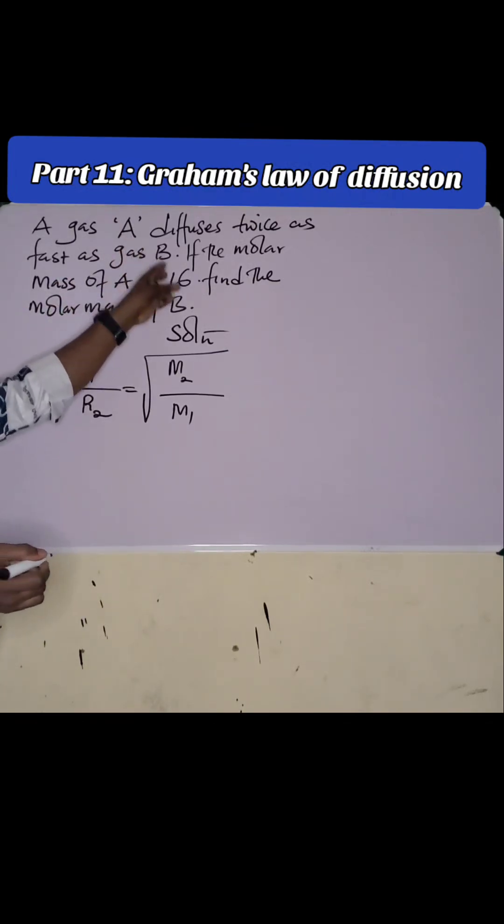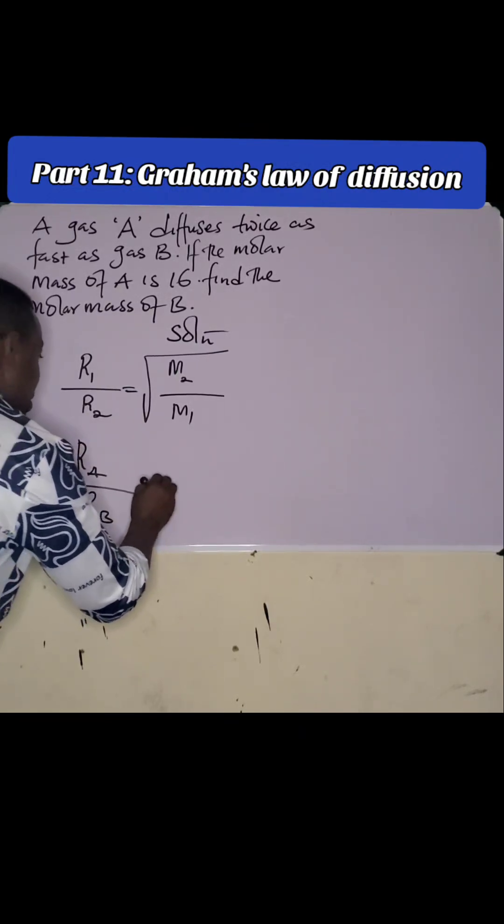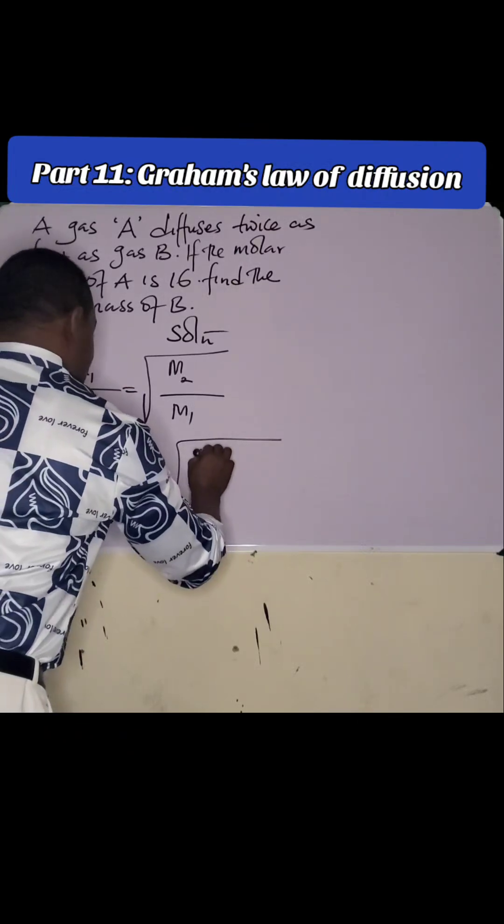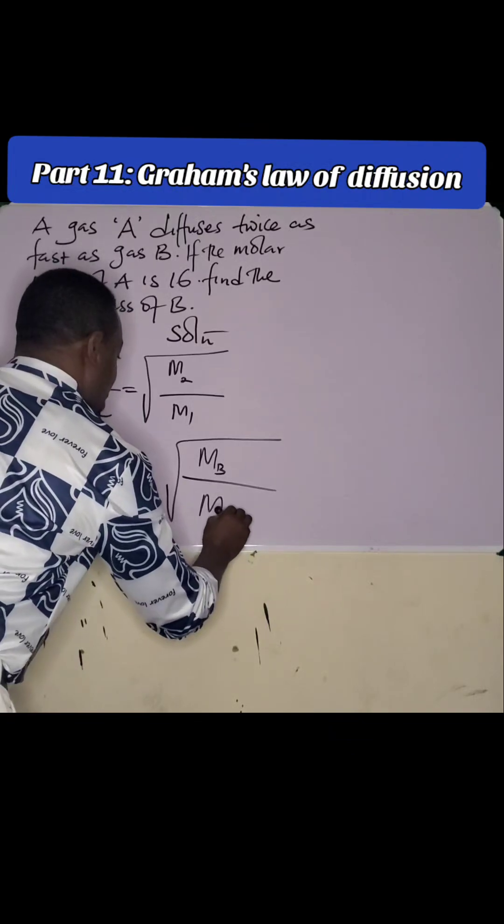So let us apply these to gases A and B, which means we have the rate of A over rate of B is equal to relative molecular mass of B over relative or molecular mass of A or molar mass.